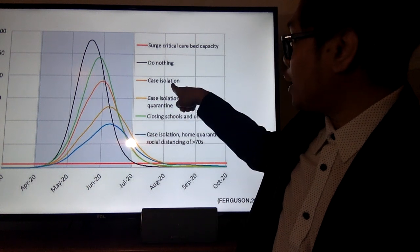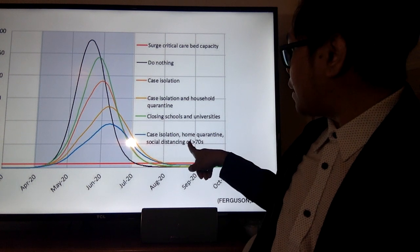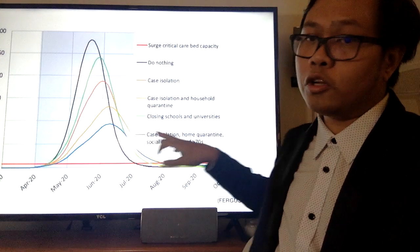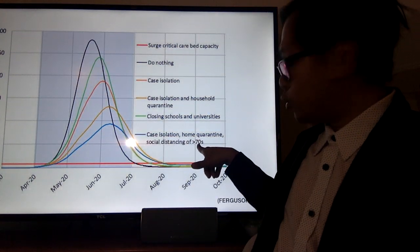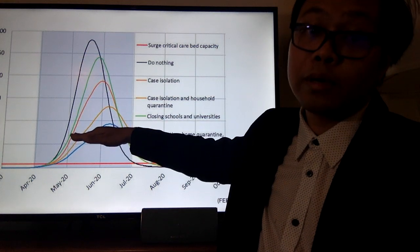Kapag in-isolate mo yung mga may sakit, eto yung magiging. Ginagawa na natin ito. At kapag may tinatawag na social distancing, lumalayo. Kinompute din nila, kapag lumayo yung mga 70 and above, paano nyo mapapababa yung epidemic curve?